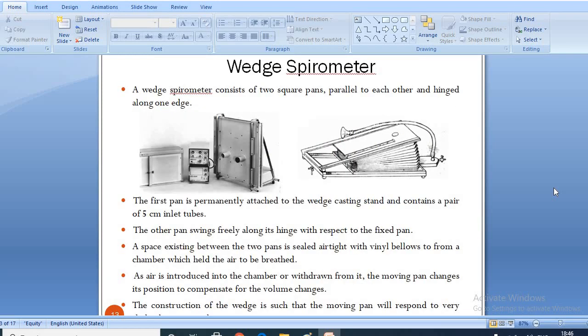The second type is a wedge spirometer. A wedge spirometer consists of two square pans parallel to each other and hinged along one edge. The first pan is permanently attached to the wedge casting stand and contains a pair of 5 cm inlet tubes. The other pan swings freely along its hinge with respect to the fixed pan. A space existing between the two pans is sealed airtight with vinyl bellows to form a chamber which holds the air to be breathed.